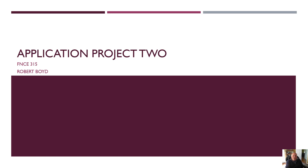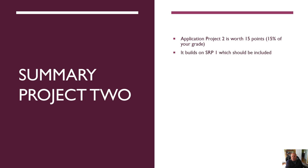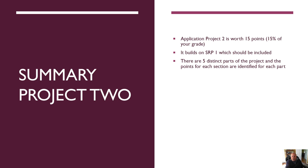Hello. Welcome to application project number two for financial statement analysis, summer 2020. Let me give you a brief summary of the project. It's worth 15 points or 15% of your grade. It builds on SRP1, which should be included in this presentation — take the first presentation you did, project one, and integrate it into this. A table of contents can be very helpful. There are five distinct parts of the project, and the points for each section are identified.